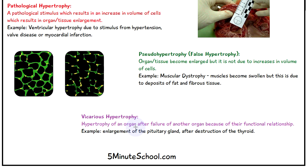Vicarious hypertrophy is the enlargement of an organ after the failure of another organ, due to their functional relationship. A perfect example is the enlargement of the pituitary gland after destruction of the thyroid.